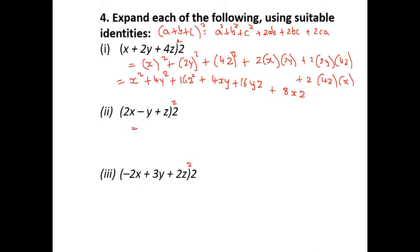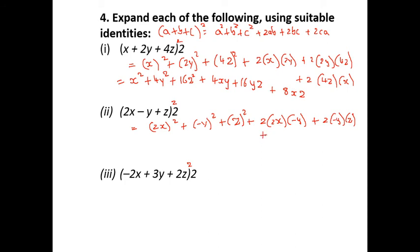For (2x − y + z)²: writing with the negative sign in bracket — (2x)² + (−y)² + z² + 2(2x)(−y) + 2(−y)(z) + 2(z)(2x) = 4x² + y² + z² − 4xy − 2yz + 4xz.